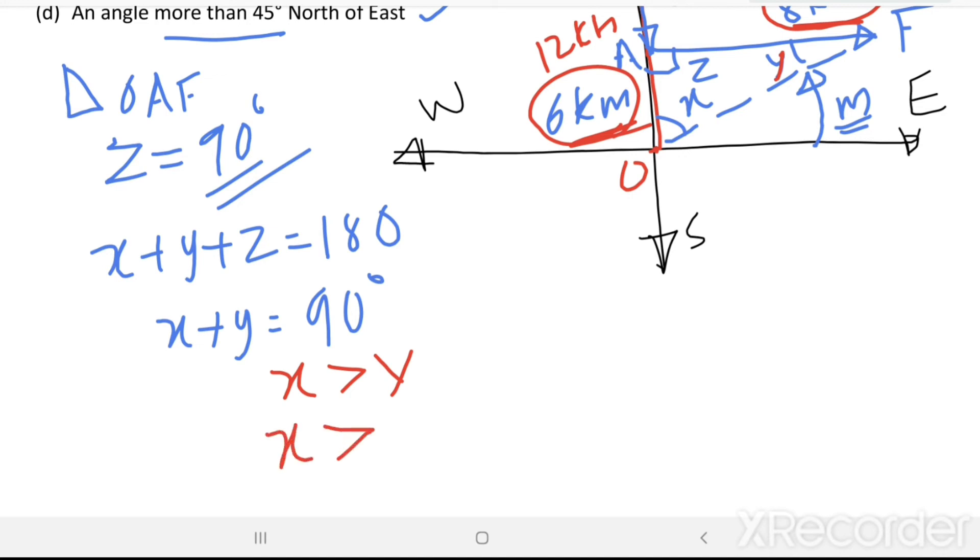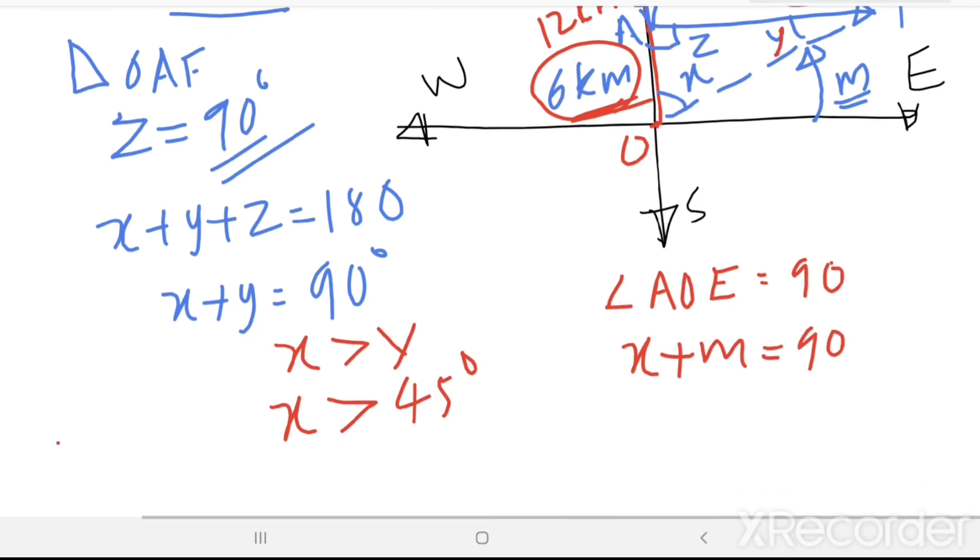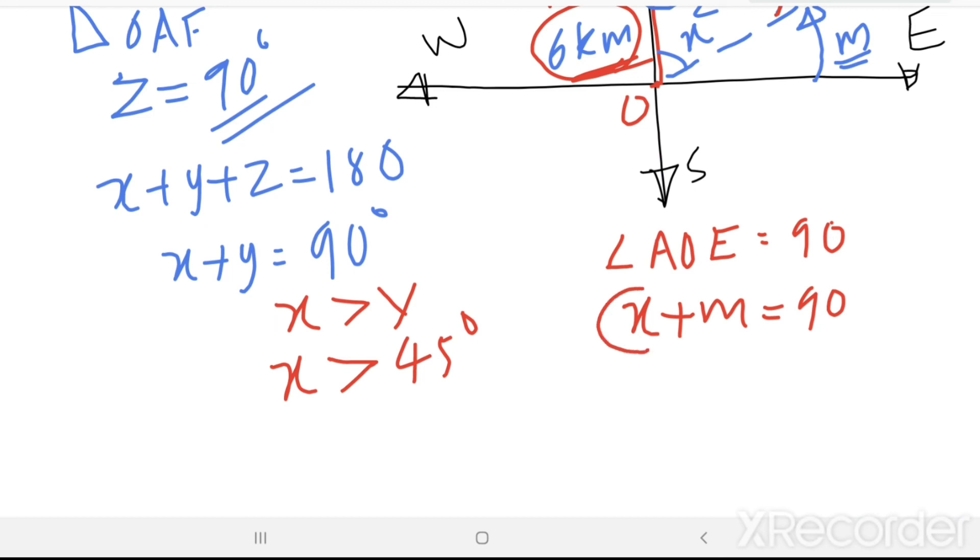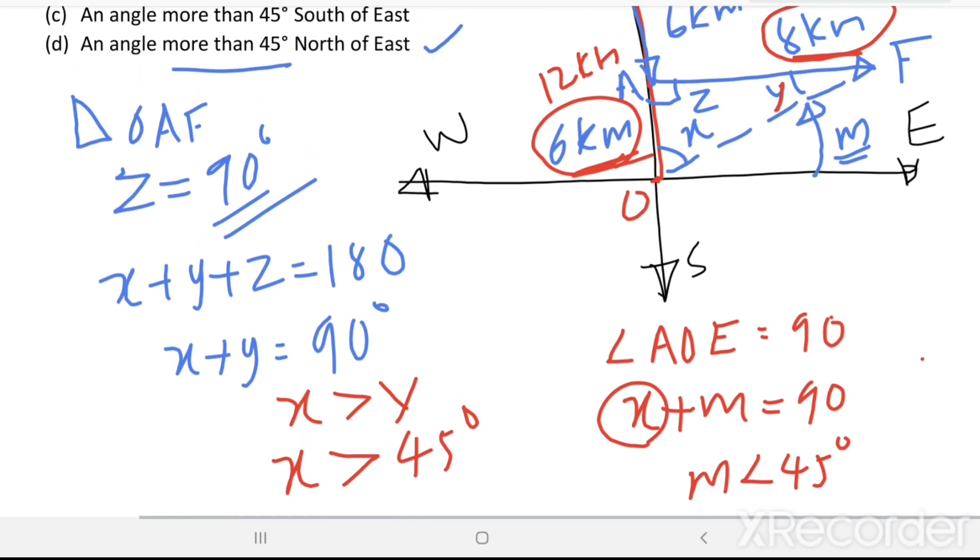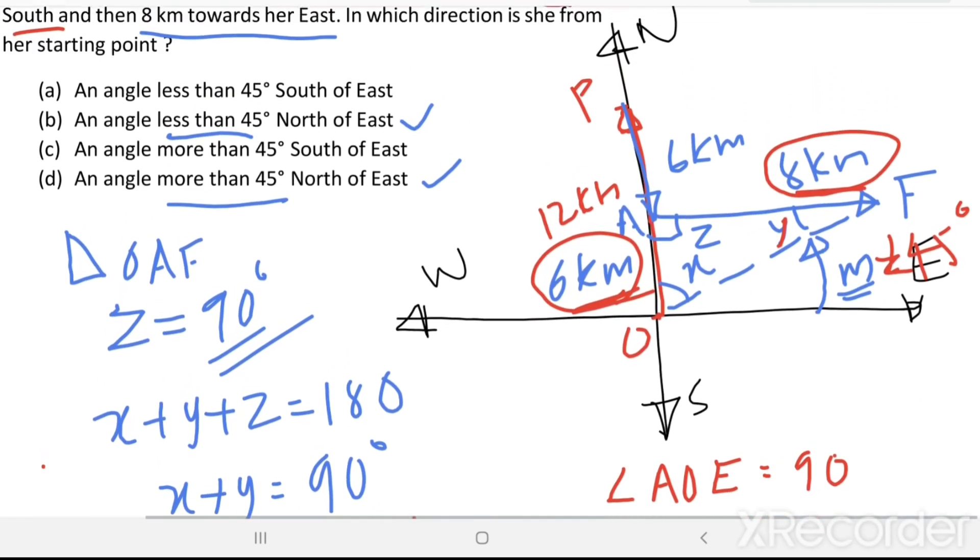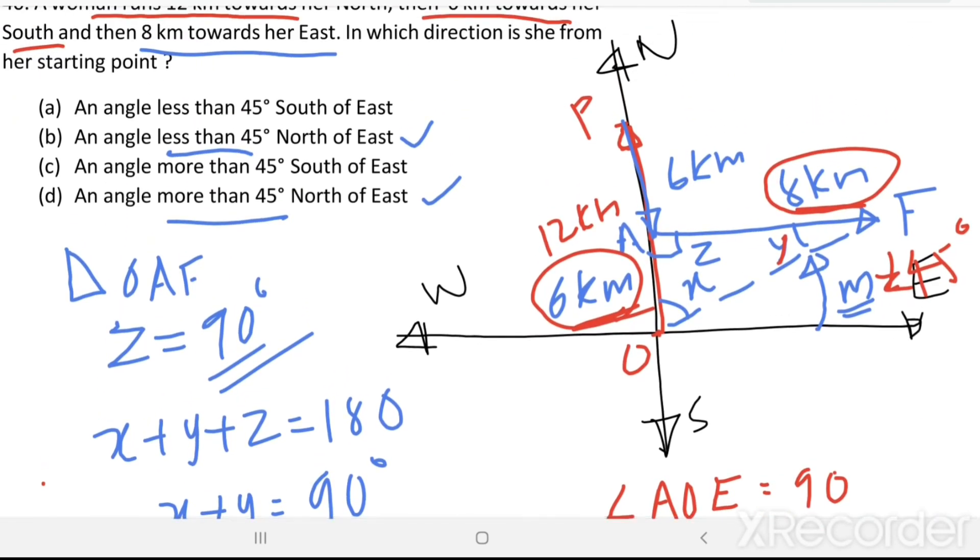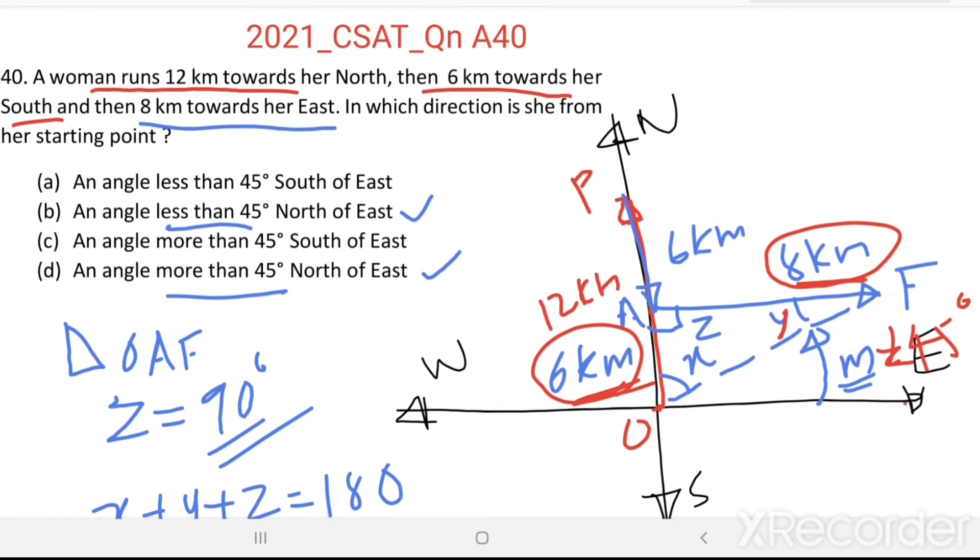Now here, angle AOE equal to 90 degree, that means angle X plus M equal to 90 degree. Here X is greater than 45 degree, that means M is less than 45 degree. So she is standing at an angle of less than 45 degree north of east from her starting point. Option B is the right answer.